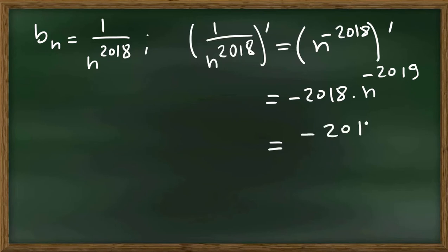So it's minus 2018 over n^2019, and this is negative. So b_n is decreasing.